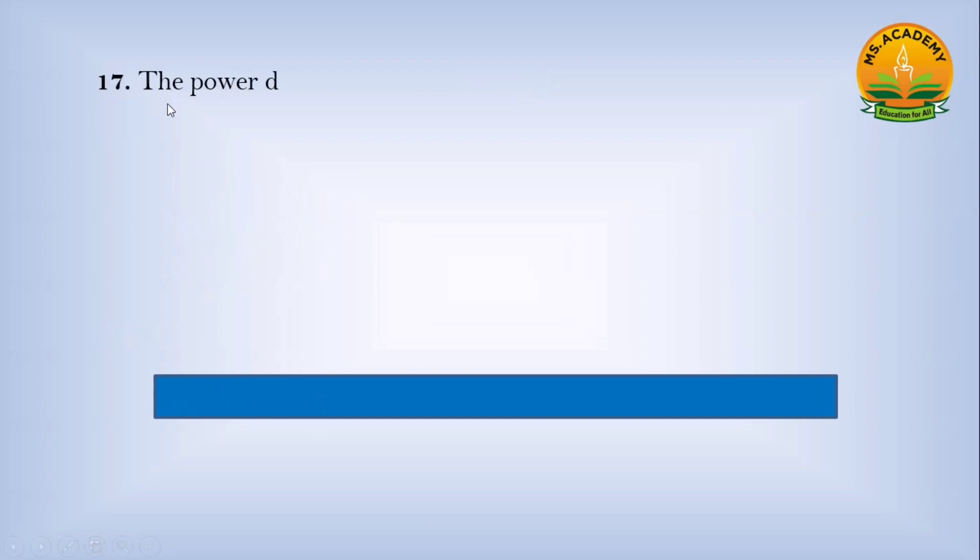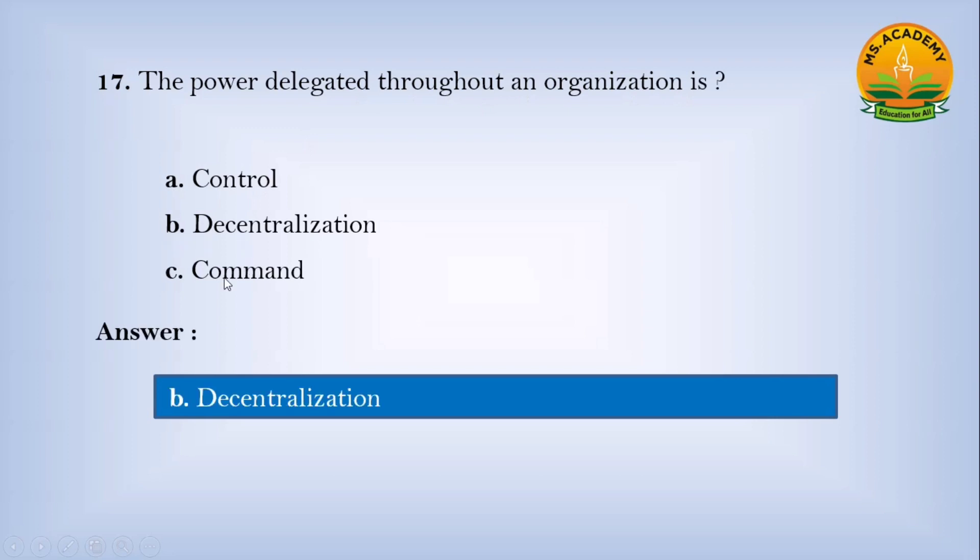The power delegated throughout an organization is: Option a) Control, Option b) Decentralization, Option c) Command. Answer: b - Decentralization.